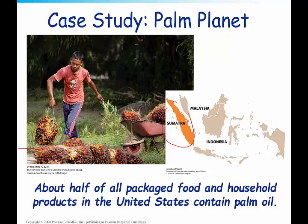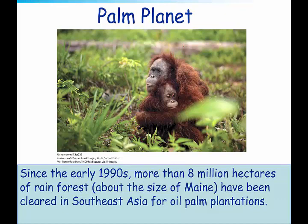Palm oil has become popular because it is replacing hydrogenated oils or fats. Several years ago, people got very upset about hydrogenated oils because they have an ability to increase cardiovascular disease. Palm oil is healthier and tasteless, so you can add it to a lot of products, and it has a soft, thick texture. Since the early 1990s, more than 8 million hectares of rainforest — about the size of Maine — have been cleared in Southeast Asia for oil palm plantations.